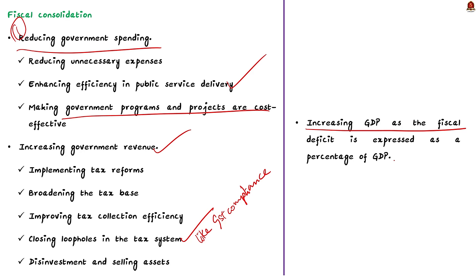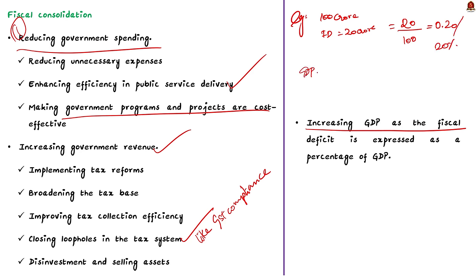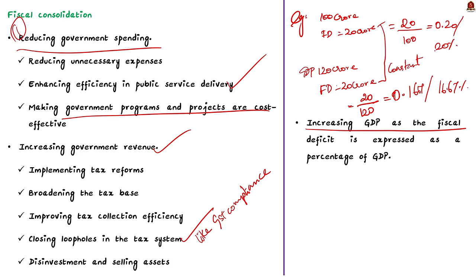For example, imagine a country with a GDP of 100 crore rupees and a fiscal deficit of 20 crore rupees. The fiscal deficit as a percentage of GDP would be 20/100 = 20%. Now suppose GDP increases to 120 crore rupees but the fiscal deficit remains at 20 crore rupees. The fiscal deficit as a percentage of GDP becomes 20/120 = approximately 16.67%. So even though the fiscal deficit remained constant, it dropped from 20% to 16.67% as a percentage of GDP because the GDP increased. To reduce the fiscal deficit, the government can take steps to increase the country's GDP.